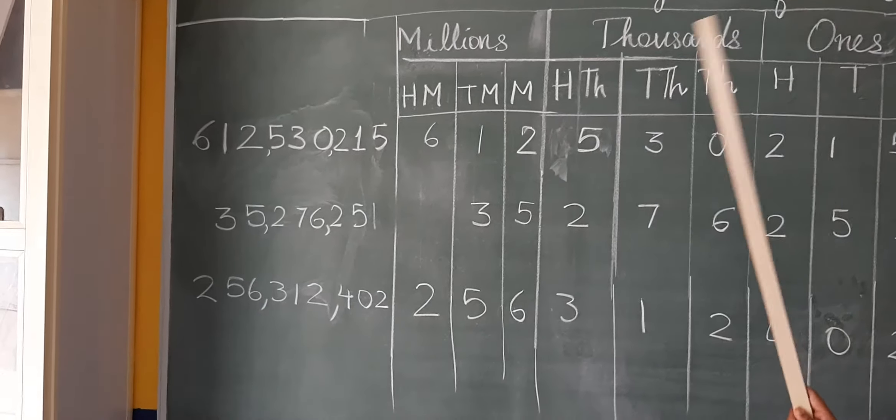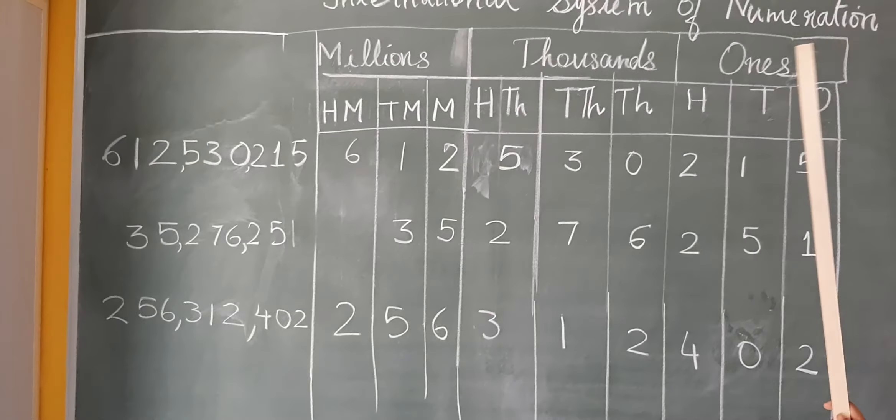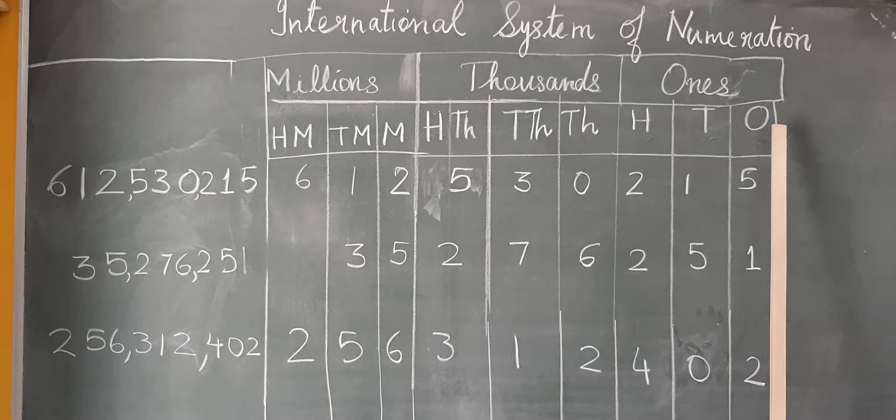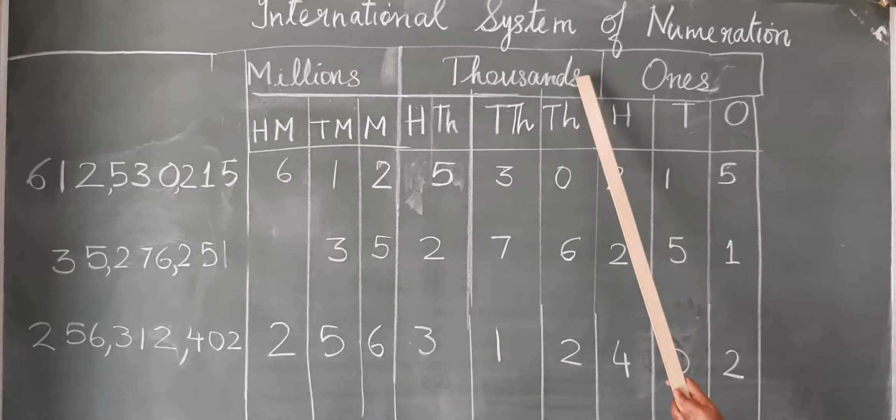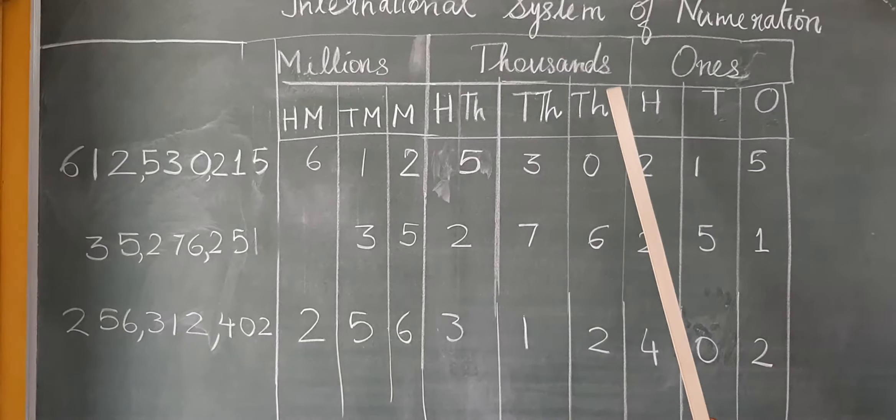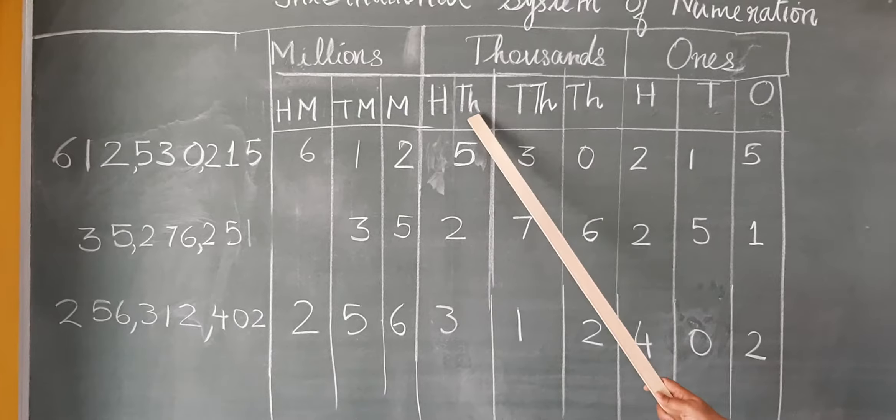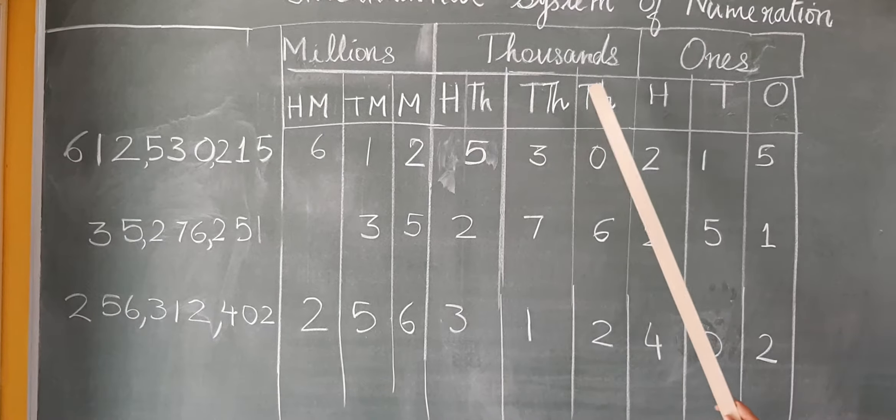In our Indian system, what was the way of writing it? You had the ones period, then the thousands period, which had only thousands and ten thousands. But here there is an addition: hundred thousands also.